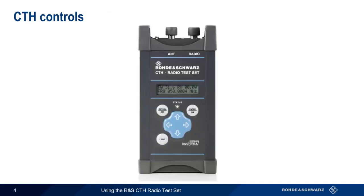There are four basic controls on the CTH. To turn the CTH on, press and hold the Enter/On button. This button is also used to select menu items.